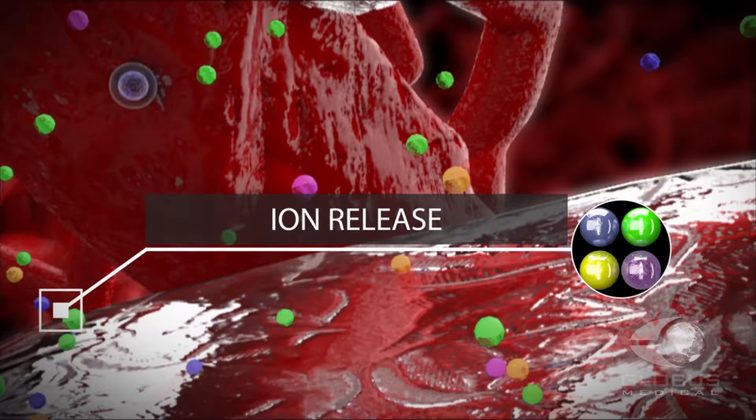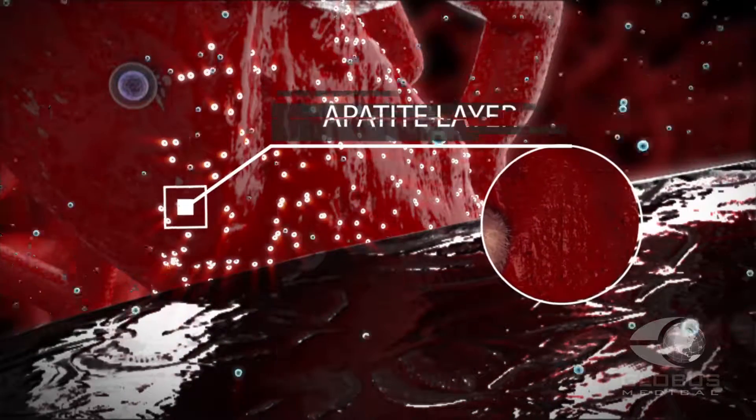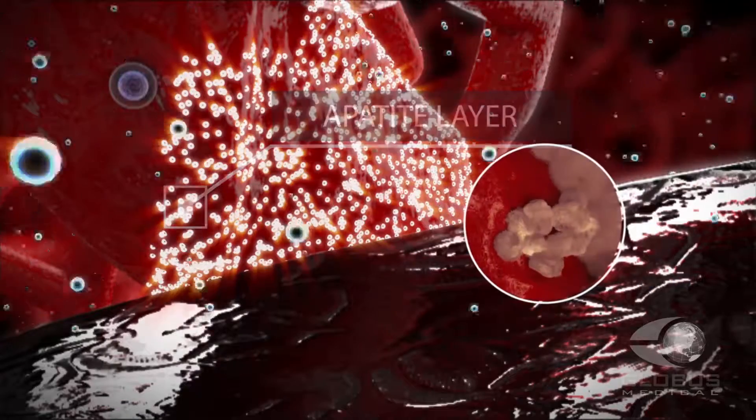Once ions are released from the bioglass, a hydroxycarbonate apatite layer forms on the surface of the matrix, creating an ideal surface for cellular attachment and entrapment of growth factors.